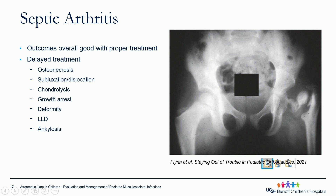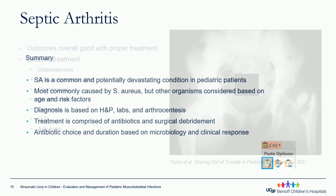Septic arthritis, if managed properly, has good overall outcomes. With delayed treatment, complications include osteonecrosis, subluxation or dislocation of the joint as seen in the image here, chondrolysis, growth arrest from physeal injury which can cause deformity and limb length discrepancy, and ankylosis or pathologic fusion across the joint.